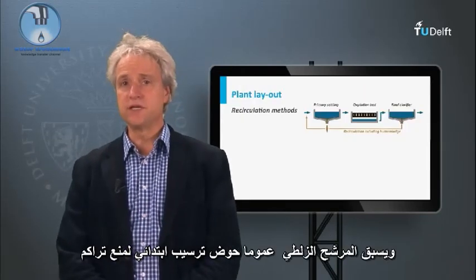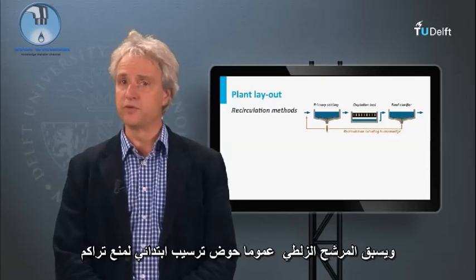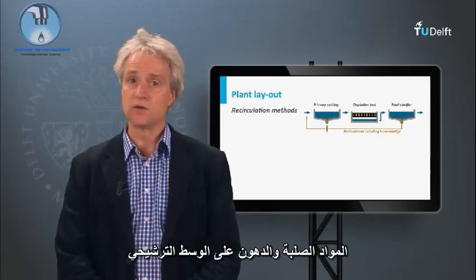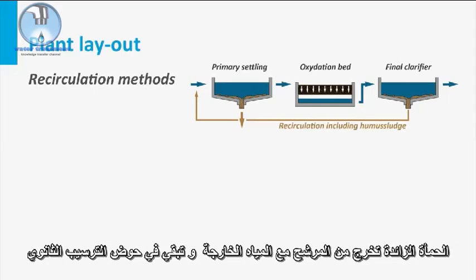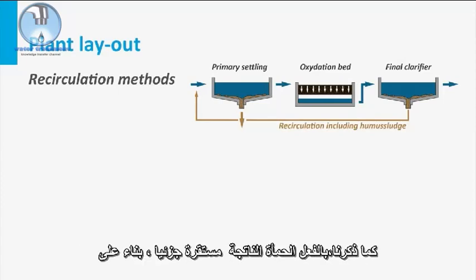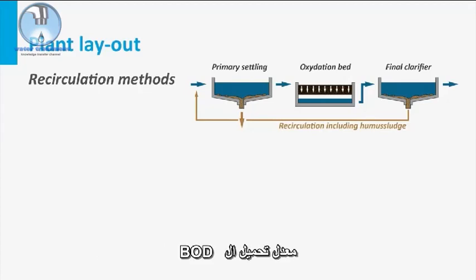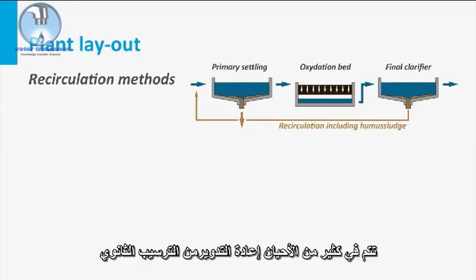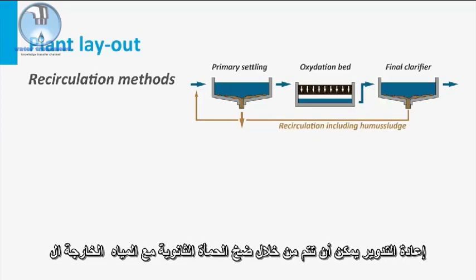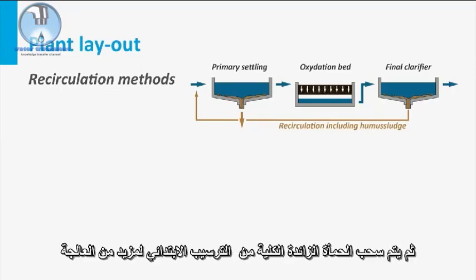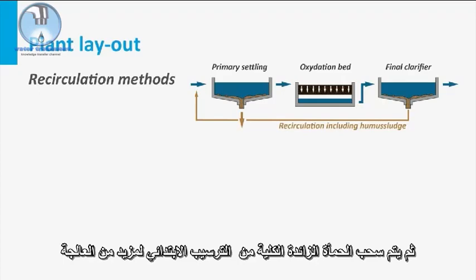A trickling filter is generally preceded by a primary clarifier to prevent the accumulation of solids and fats onto the filter bed. Excess sludge leaves the filter with the effluent and is retained in a secondary clarifier. As mentioned, the produced sludge is already partly stabilized, dependent on the applied BOD loading rate. From the secondary clarifier, often recycling is performed. Recycling can be performed by pumping the secondary sludge with the nitrified effluent to the primary clarifier. The overall excess sludge is then withdrawn from the primary clarifier for further treatment.